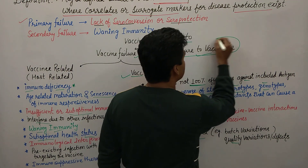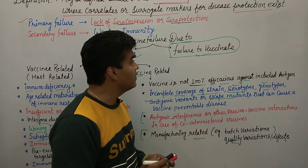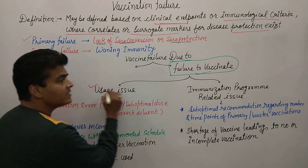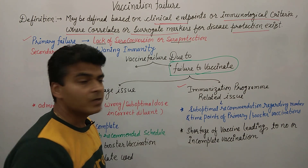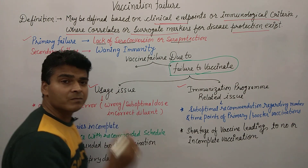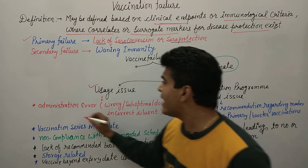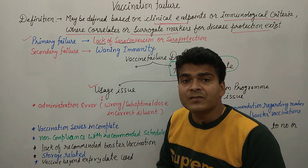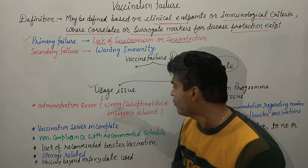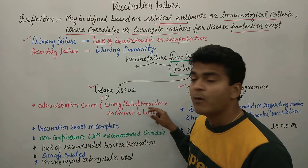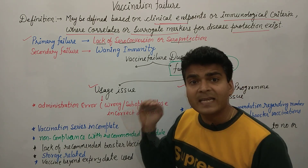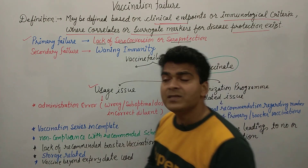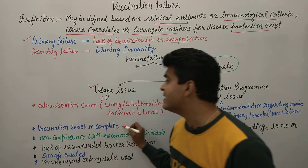Now, failure to vaccinate also has two points: one is uses issues and second is immunization program-related issues. What are the uses issues? The first is administration error — the vaccine was not given in the proper way, not via the correct route, not with the correct dilution. Wrong dose was given, wrong route was used, sub-optimal dose was given — for example, 1 ml should have been given but 0.5 ml was given. Incorrect dilution was performed. So administration error can occur.